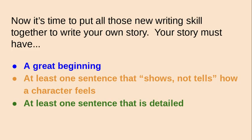So now it's time to put all of those new writing skills together to write your own story. This is what your story must have. You can choose the topic — it could be something that you've done recently, something you've done long ago, or even one that you make up in your head. But it has to have a great beginning using one of the new beginnings we've learned. It must have at least one sentence that shows, not tells, how a character feels, and it has to have at least one sentence that is so full of details your reader is going to be very impressed.